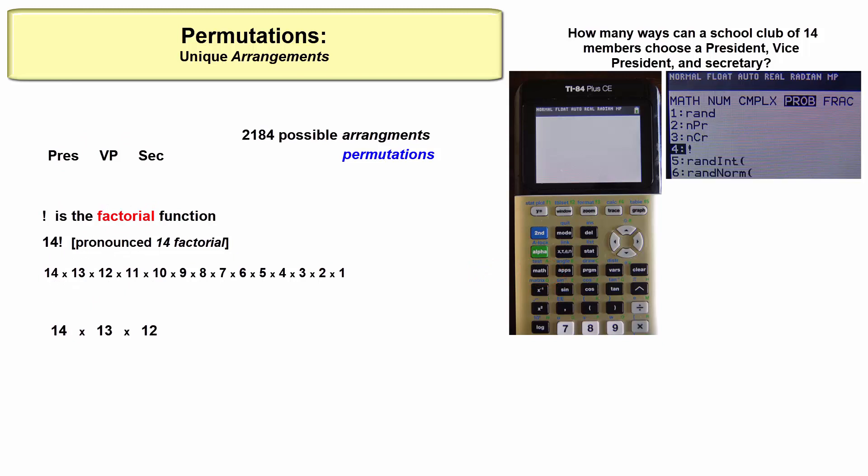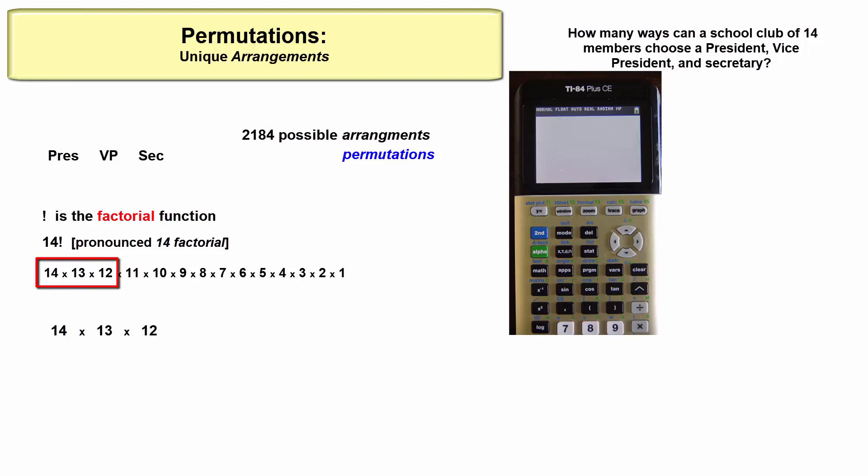...is the correct result. When we select without replacement, the numbers decrease like this, which is the beginning of 14 factorial. If we divided 14 factorial by 11 factorial, then by golly we get the 14 times 13 times 12.